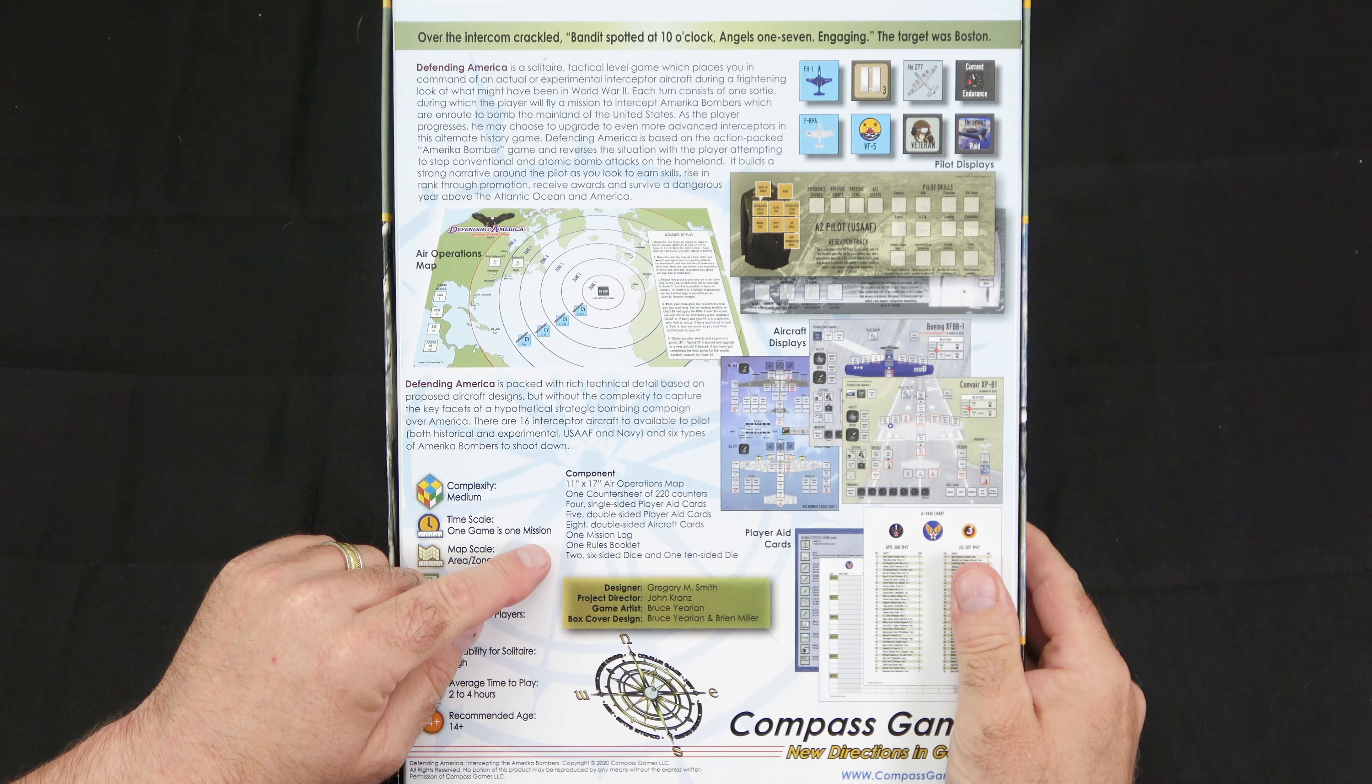And that is a look at everything you get inside of Defending America, Intercepting the America Bombers 1947 to 1948. This is a game designed by Gregory M. Smith and published by Compass Games. This is a great sequel to America Bomber Evil Queen of the Skies.